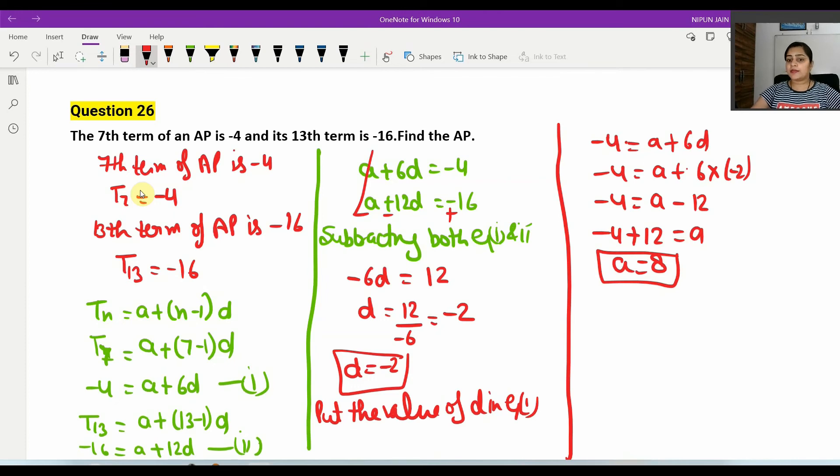So the first term is 8, and the common difference is minus 2. If we subtract 2 from 8, we get 6. Then subtract 2 again, we get 4. Again subtract 2, we get 2. Again subtract 2, we get 0. You can see the difference is minus 2 each time. Let me cross check this. So this becomes our AP sequence.